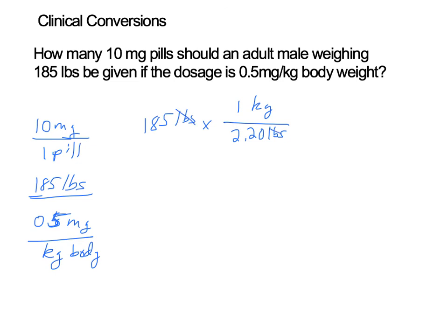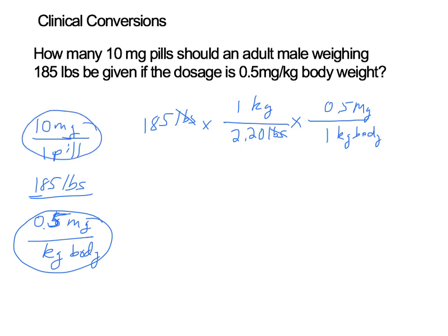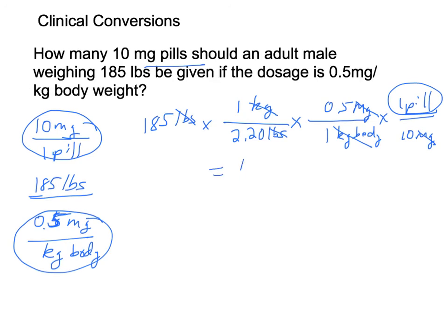Once pounds cancel, you have kilograms. Now apply the dosage: 1 kilogram of body mass requires 0.5 milligrams, so multiply by 0.5 mg per 1 kg. Then use the pill size: 1 pill per 10 milligrams. Kilograms cancel, milligrams cancel, and you're left with the number of pills. The calculation gives 1.93 pills following sig fig rules. But since we're counting pills, we give the patient 2 pills.